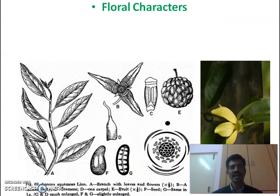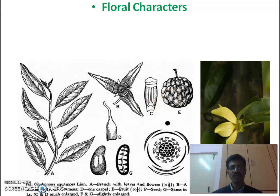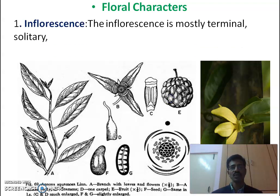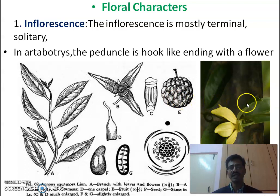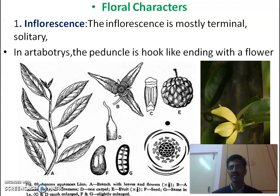Now we see the floral characters. Here we see the twig, the flower structure and floral diagram, seed and the LS of seed, ruminate endosperm, the anther, and the fruit which is an aggregated or compound fruit. Inflorescence is mostly terminal, and solitary flowers are also observed. In Artabotrys, we find a modification in the peduncle — a hook-like peduncle is observed, and the plant climbs with the help of this hook-like modified peduncle.